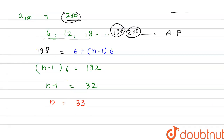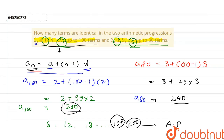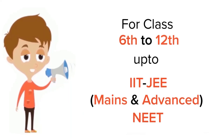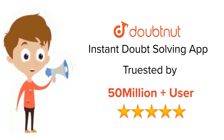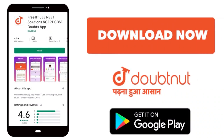So 33 is the required answer. We can say that 33 terms are identical in these two APs. I hope you guys liked it. Thank you. For class 6 to 12, IIT JEE, and NEET level — trusted by more than 5 crore students — download DoubtNut today.